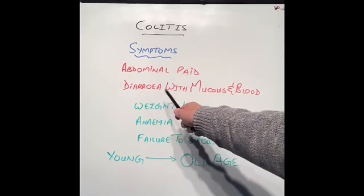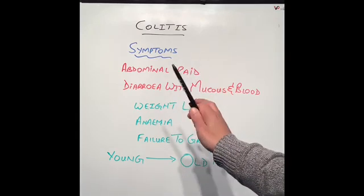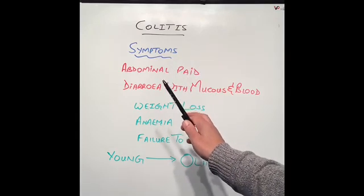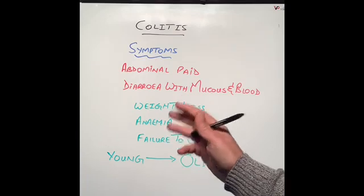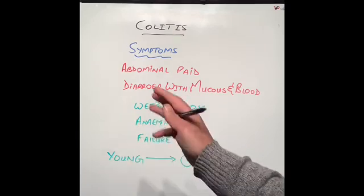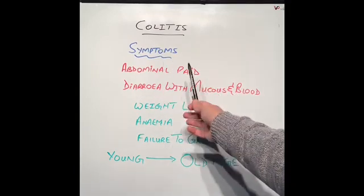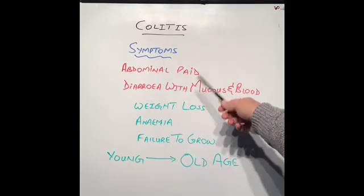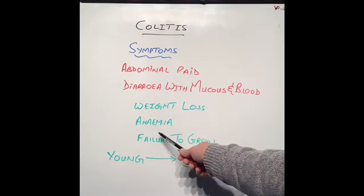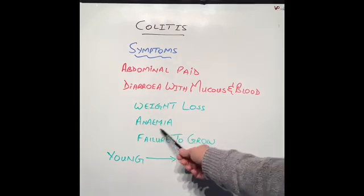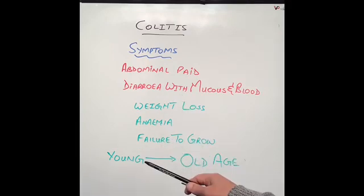The severity of abdominal pain and diarrhea depends on how bad the colitis is and how much of the colon is affected. If only a small part is affected, the symptoms are not too bad. If the inflammation is severe and affects the whole colon, symptoms get very bad — abdominal pain worsens, diarrhea worsens, more blood and mucus come out, patients start losing weight, they lose blood and become anemic, and children cannot grow properly so their growth is retarded.